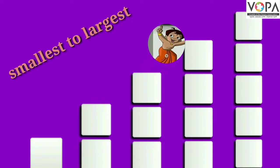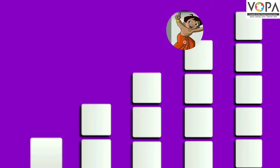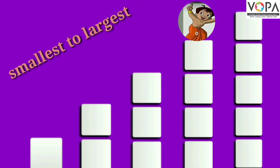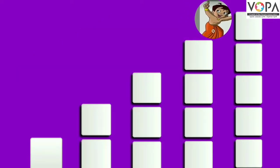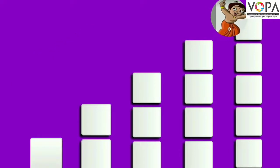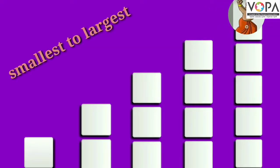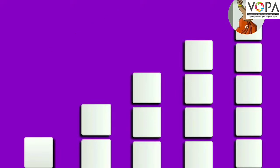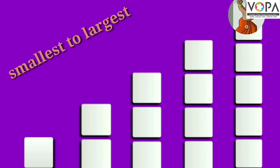Students, look at Bheem. Bheem is jumping from small step to big step arranged in a series that begins with the least or smallest numbers and ends with the greatest or largest numbers. Bheem is going small to large step — this is ascending order.